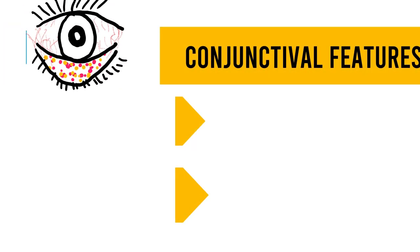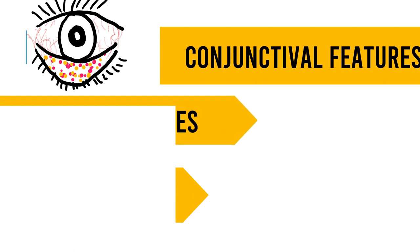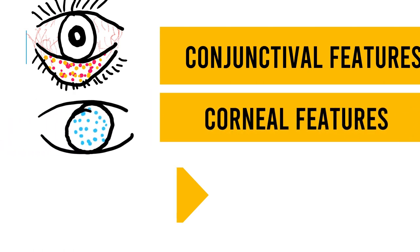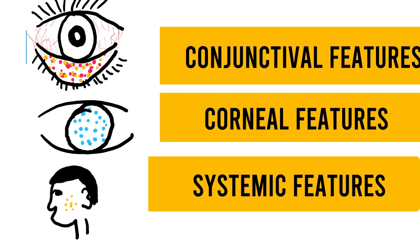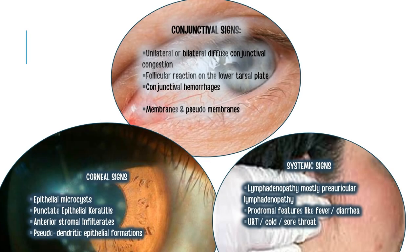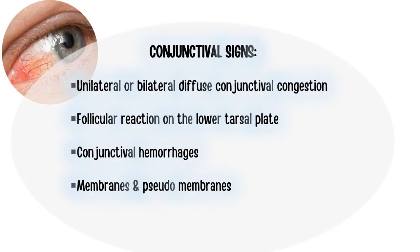Viral conjunctivitis can be identified based upon specific conjunctival features, along with corneal features and systemic features. Viral conjunctivitis is most of the time keratoconjunctivitis because it involves both the conjunctiva as well as the cornea. We shall be studying the conjunctival signs, the corneal signs, and the systemic signs. Let us first talk about the conjunctival signs seen in viral conjunctivitis.